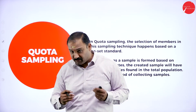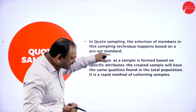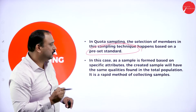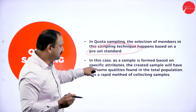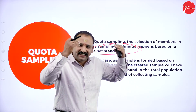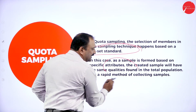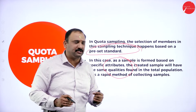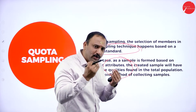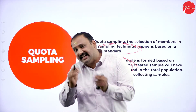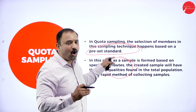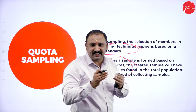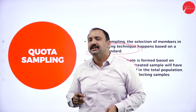Quota sampling — the selection of members in this technique happens based on a preset standard. Since the sample is formed based on specific attributes, the created sample will have the same qualities as the total population. It is a rapid method of collecting samples — fast and on specific attributes. For example, studying only commerce or science students in specific areas — the quota sample will identify the total qualities of that population and reflect the same characteristics in the entire population taken for study.